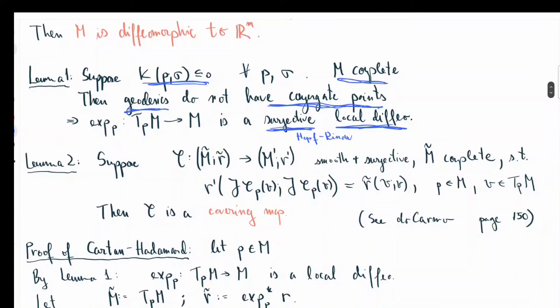Lemma 2 is a purely technical result. It says that if you have two Riemannian manifolds, M-tilda and M-prime, and a map phi between them, smooth, surjective, and M-tilda happens to be complete, such that phi is actually a local isometry.